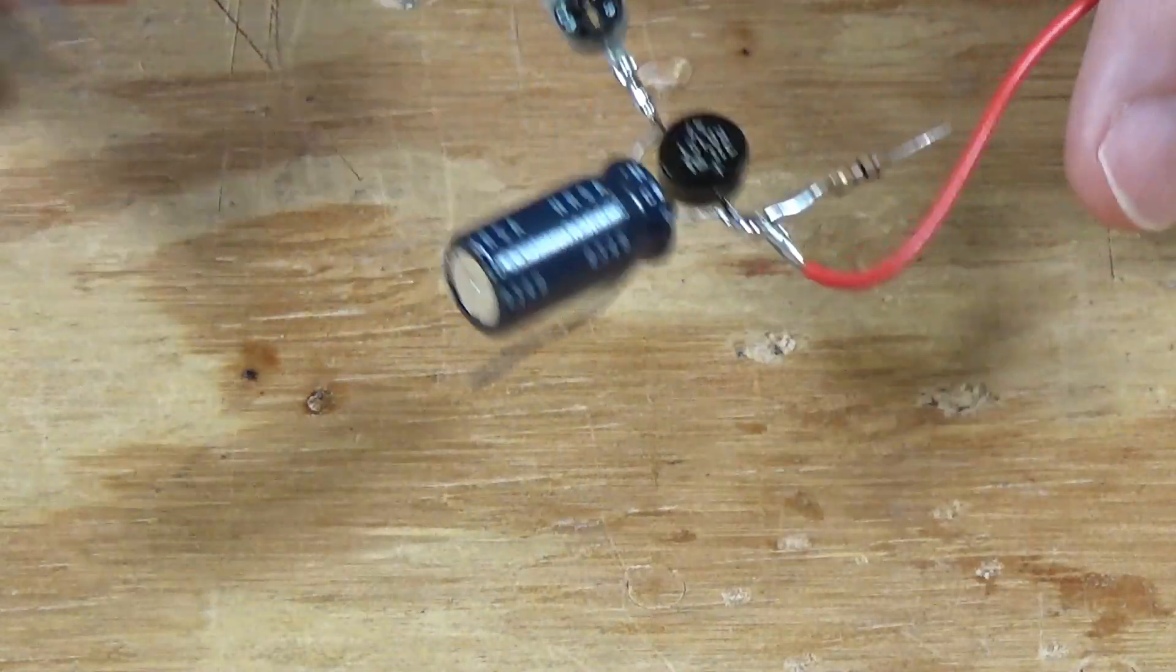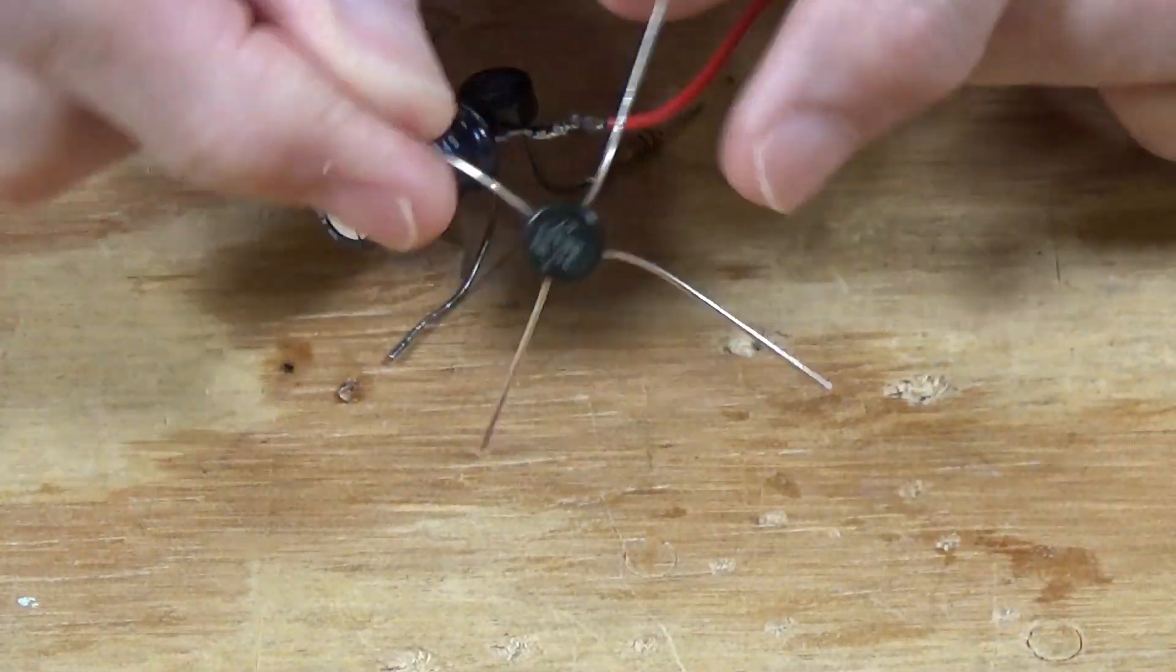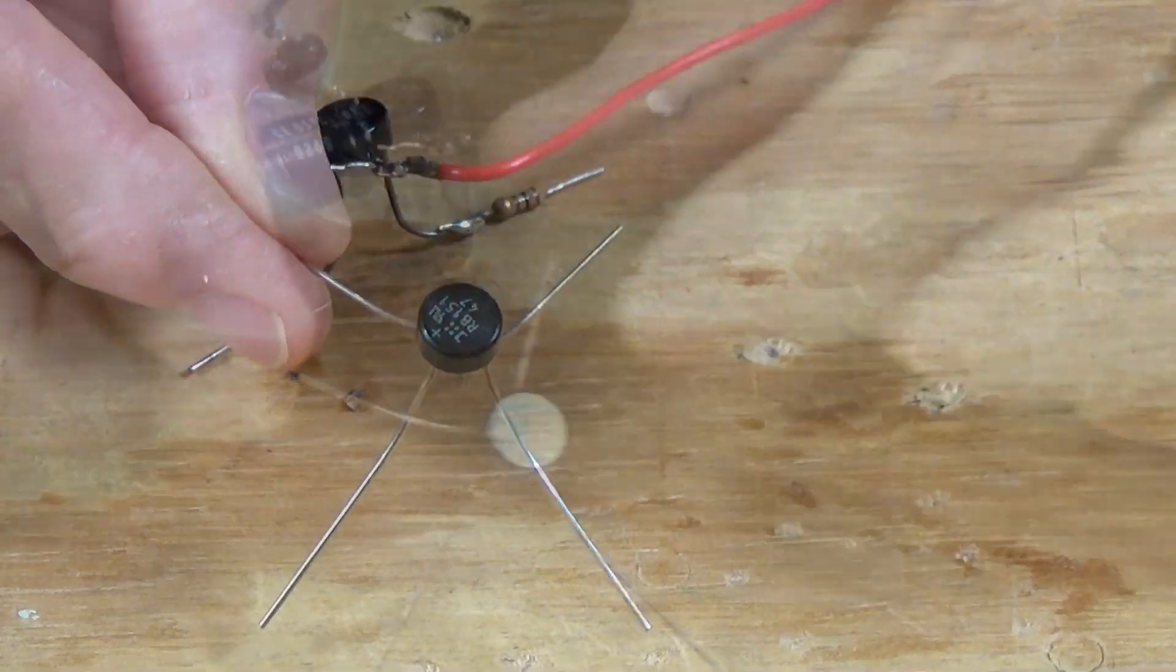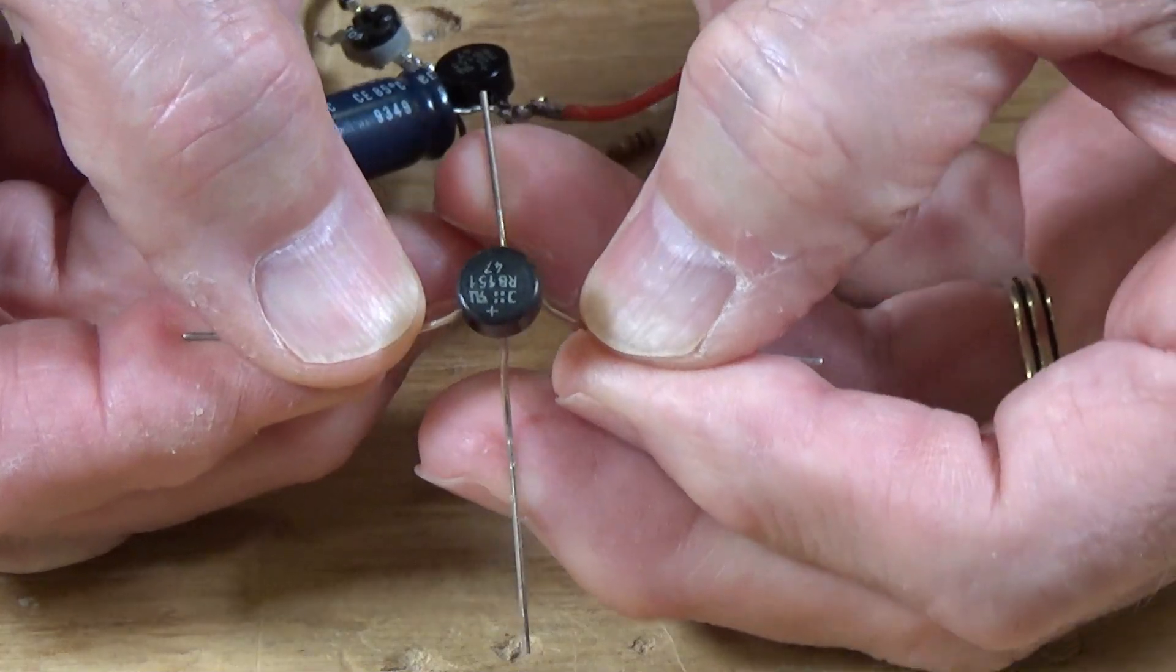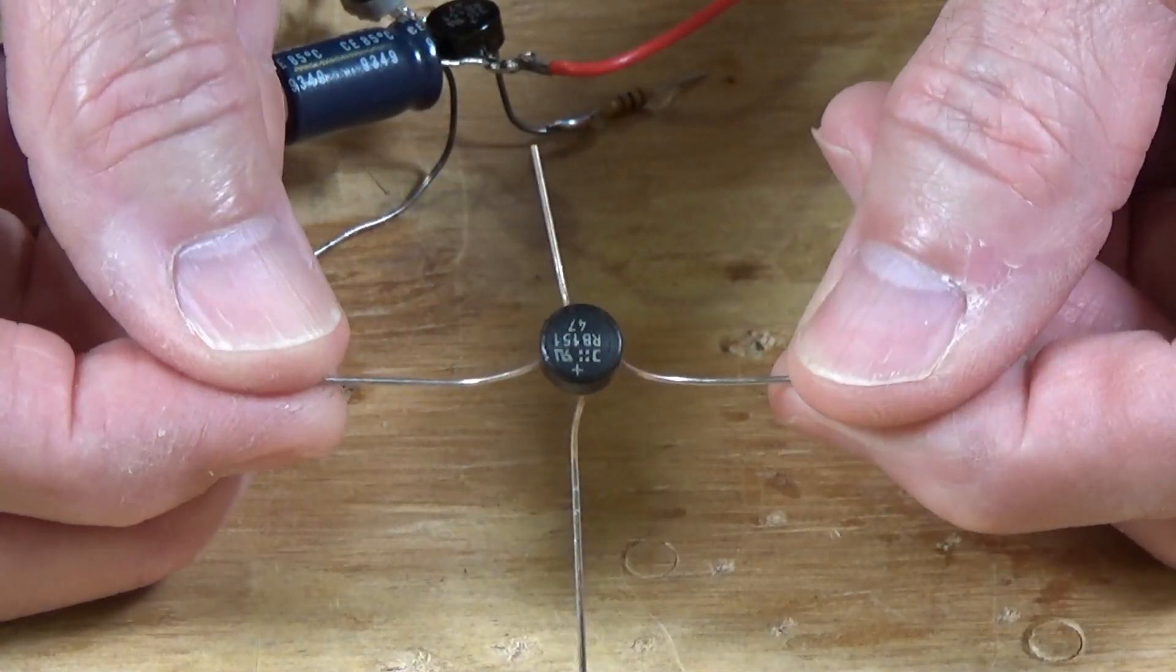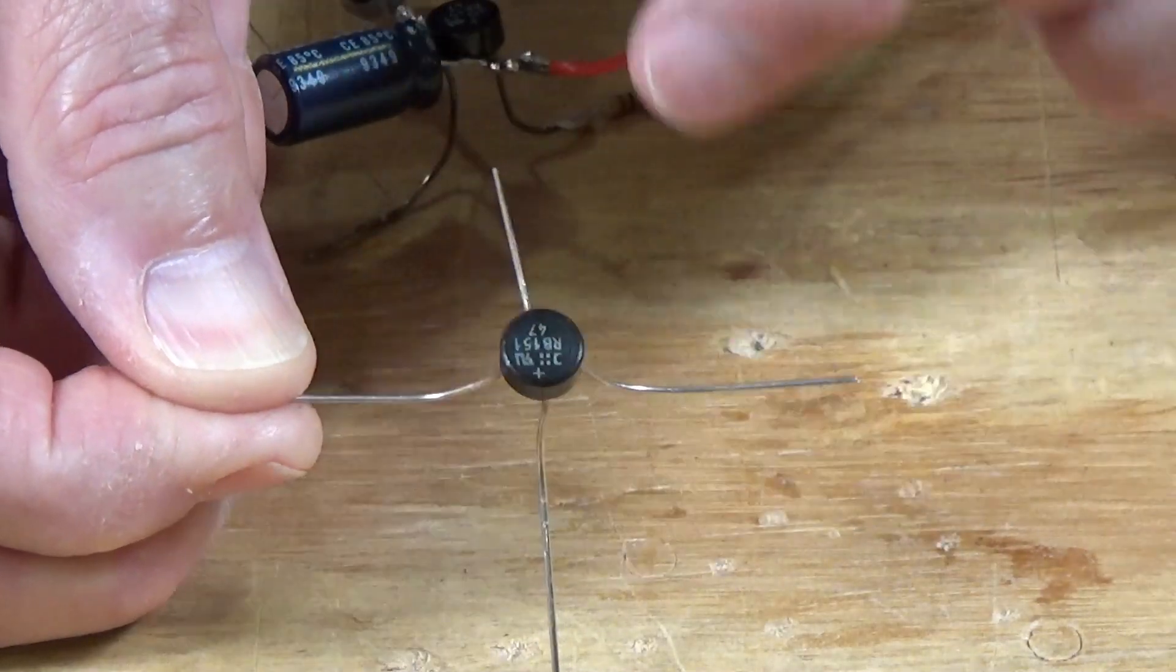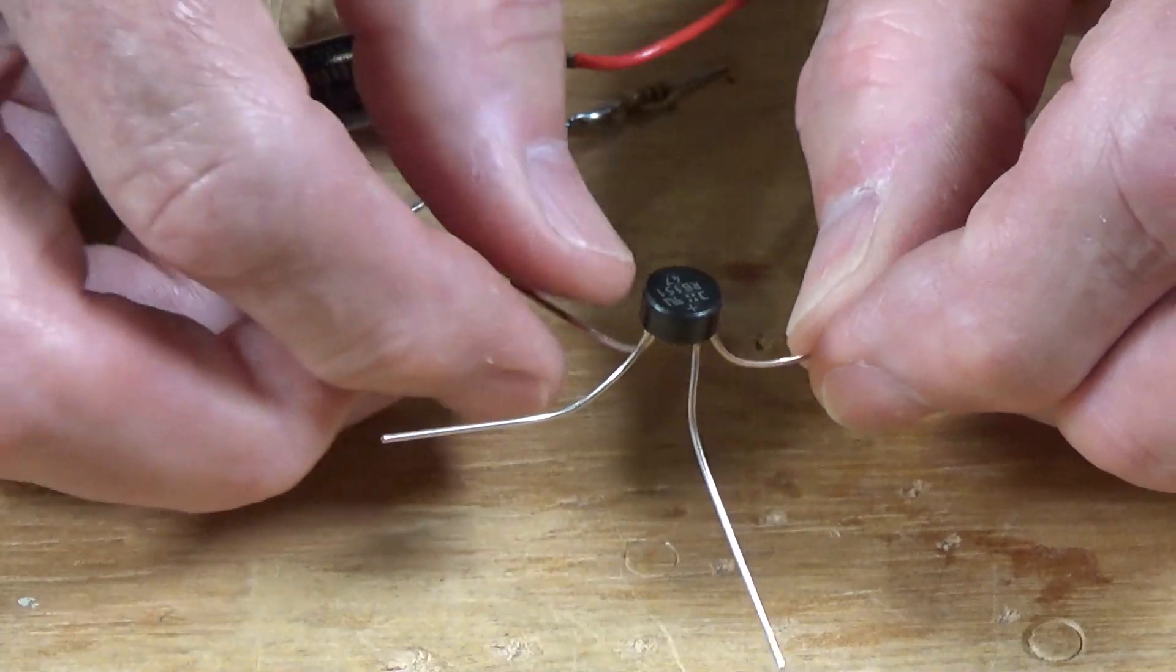So all I've done here is I've taken the bridge rectifier and I've bent these legs like this so that they're widely separated. And if you're going to just put this together with soldering like I've done, you want them widely separated so that you're not going to get any shorts inadvertently.